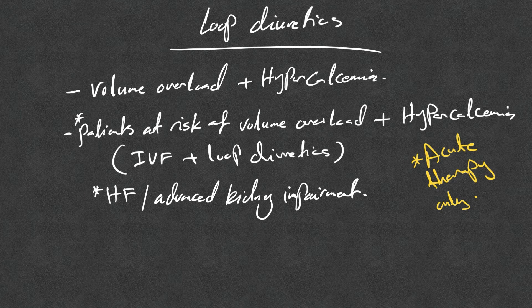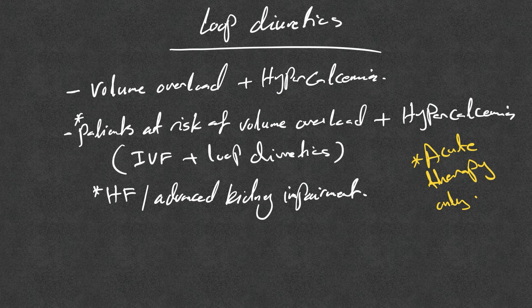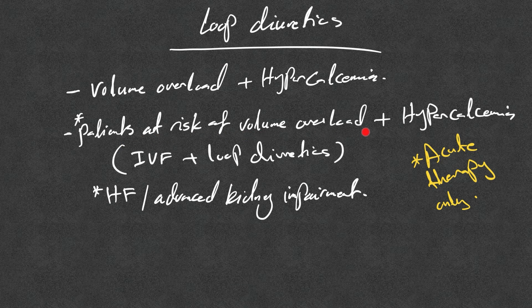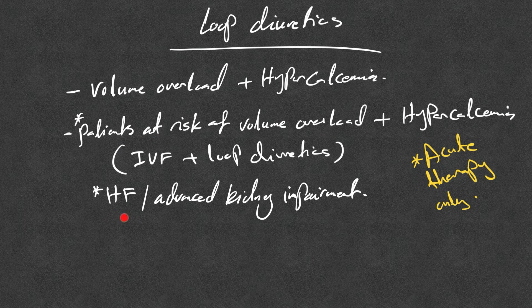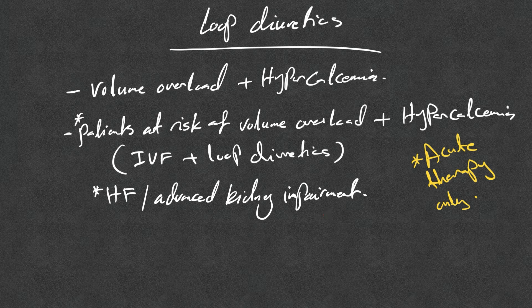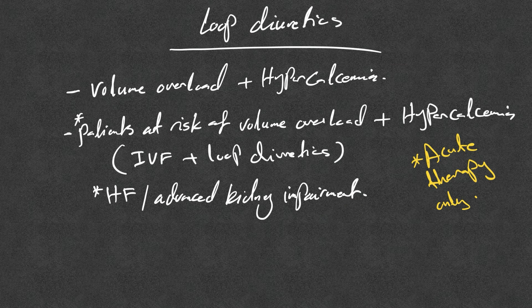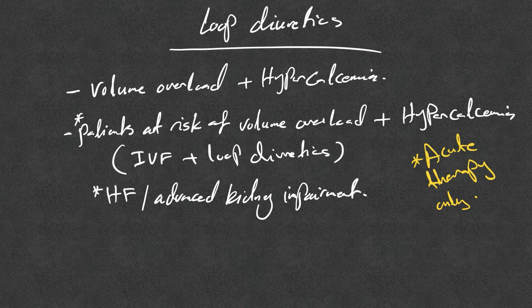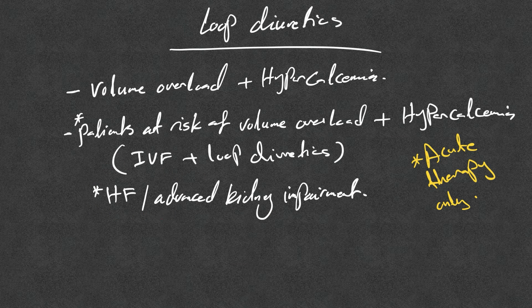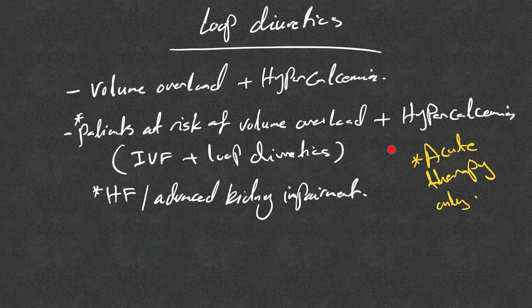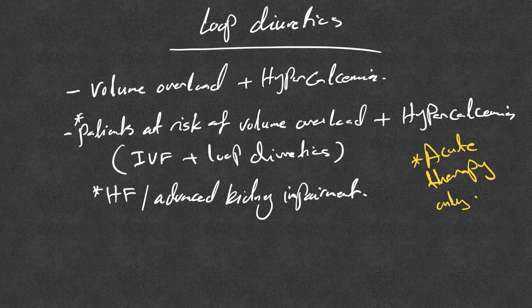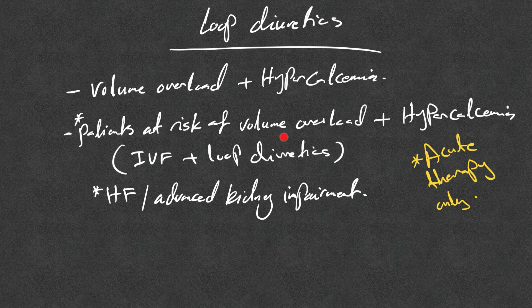Loop diuretics can be used only if there is volume overload and hypercalcemia, and can also be used in patients at risk of developing volume overload, let's say patients with heart failure or advanced kidney impairment, and we need to aggressively resuscitate them with IV fluid. What you could do, you can give fluids and you can give loop diuretics once you feel they are euvolemic. So the way I would do it, I start fluid, monitor them. Once I see they are euvolemic but I still want to give fluids, I can start loop diuretics at that point. And loop diuretics are for acute therapy only.